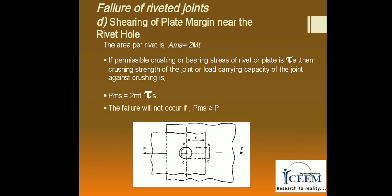The last type of failure is shearing of the plate margins near the rivet hole. In this mode of failure, the margin can shear along planes AB and CD. If the length of the margin is m, the area resisting this failure is Ams = 2 × m × t. If the permissible shearing stress of the plate is τs, then the load carrying capacity of the joint against shearing of the margin is Pms = 2 × m × t × τs. The joint will not fail if Pms ≥ P, where P is the applied load per pitch length.